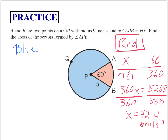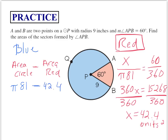Now to find the area of the blue sector, we find the area of the whole circle and subtract the area of the red sector. The area of the circle is pi r squared, which is 81 pi. Multiplying 81 times pi gives us 254.5. Subtracting the red area of 42.4, we end up with 212.1 units squared.